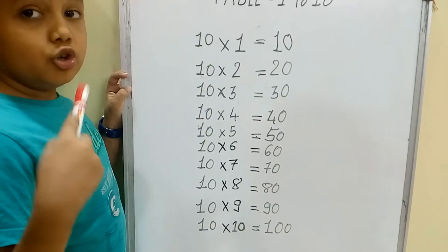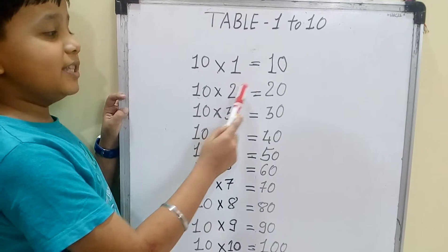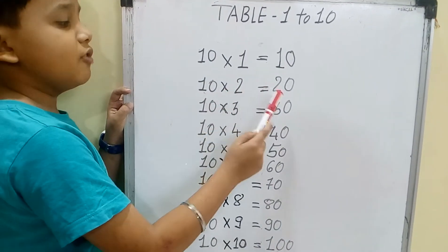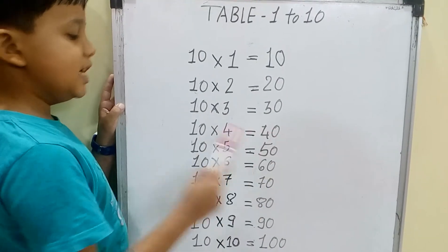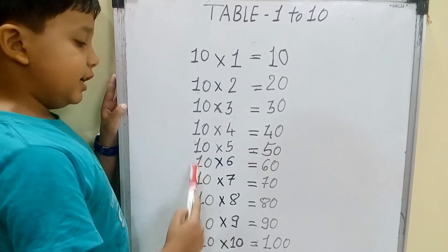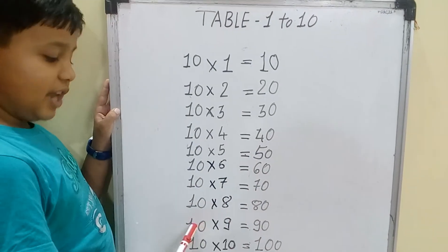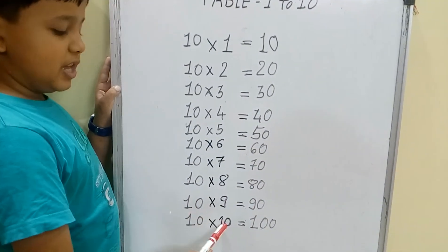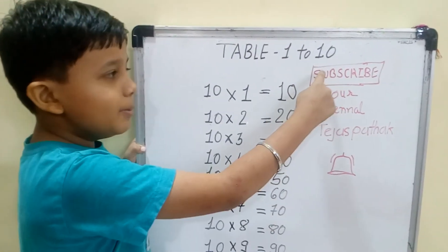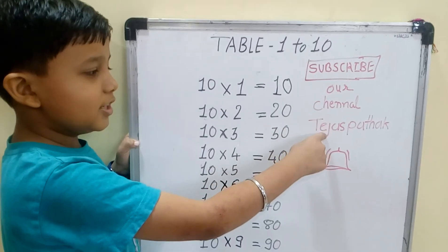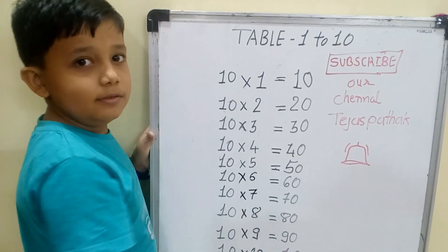Now children, you repeat with me the table of ten. Ten ones are ten, ten twos are twenty, ten threes are thirty, ten fours are forty, ten fives are fifty, ten sixes are sixty, ten sevens are seventy, ten eights are eighty, ten nines are ninety, ten tens are one hundred. If you like this video of the table, please subscribe to our channel and hit the bell icon. Thank you.